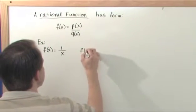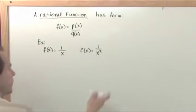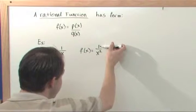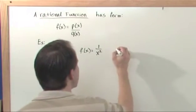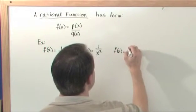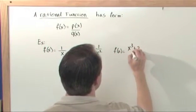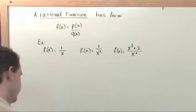Another rational function would be f(x) is equal to 1 over x squared. Okay, again, there's a polynomial on the top. It's a really simple one. It's just a constant, and then there's a polynomial on the bottom. Another example would be f(x) is equal to x cubed plus 2 over x squared. See, there's a polynomial on the top and a polynomial on the bottom.